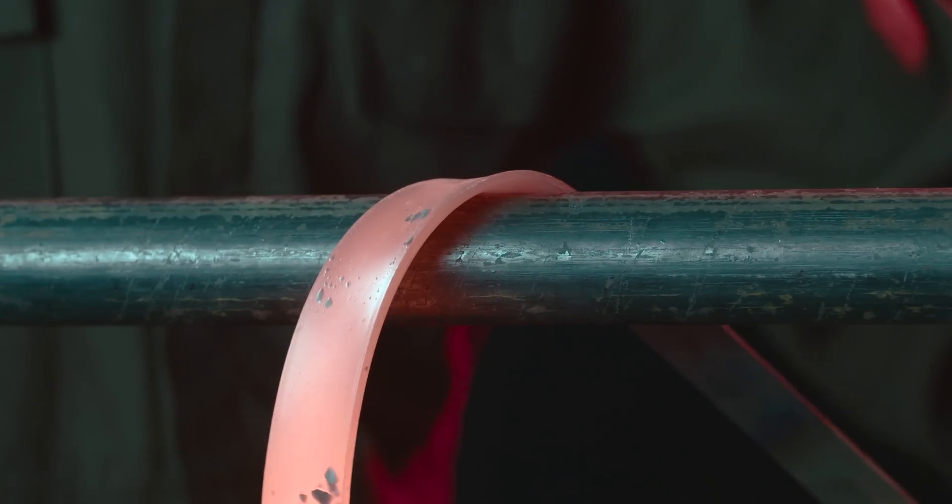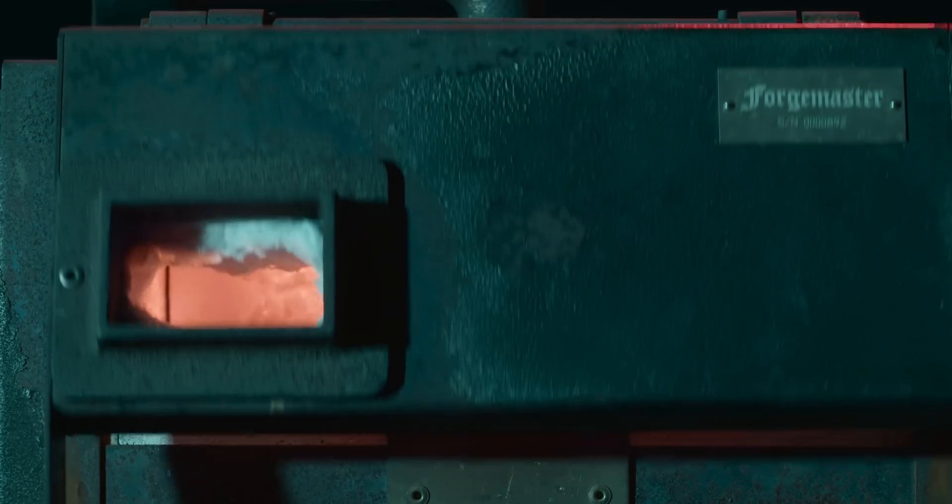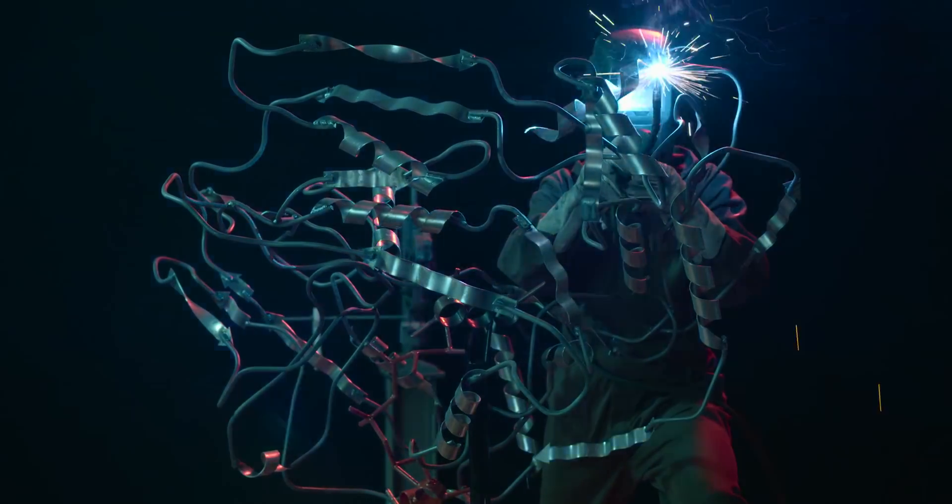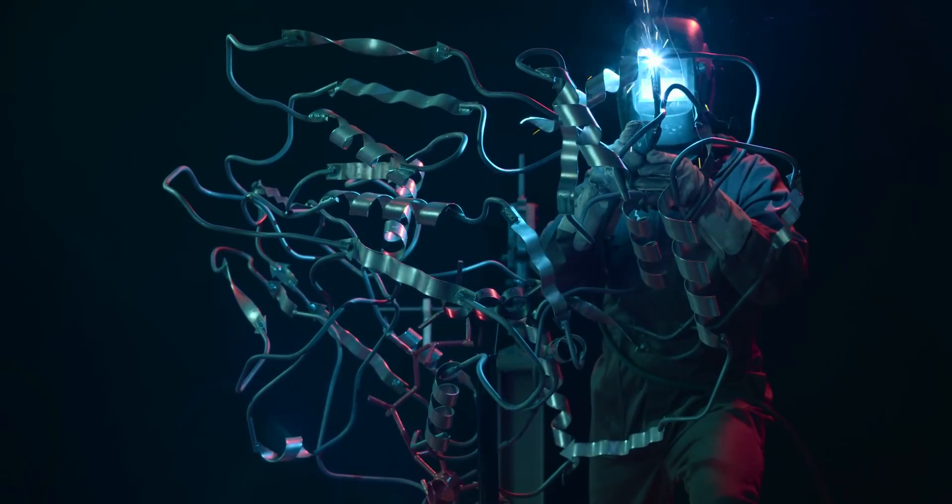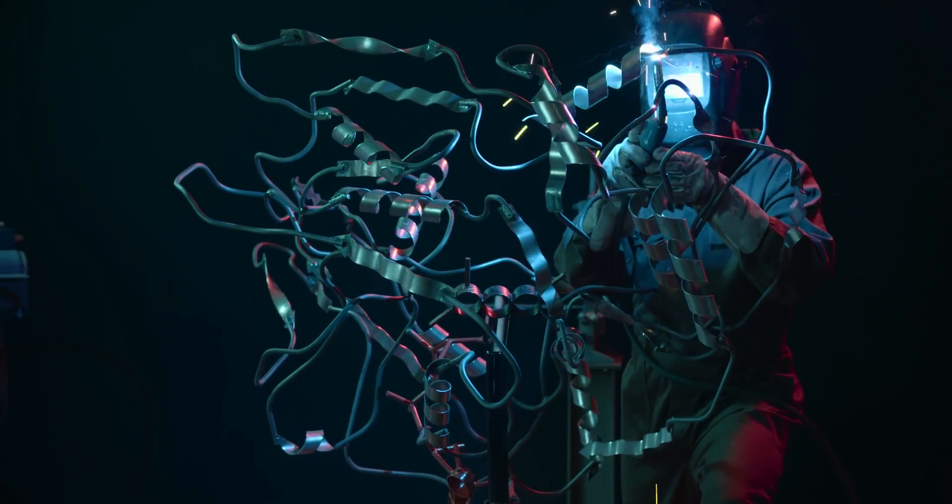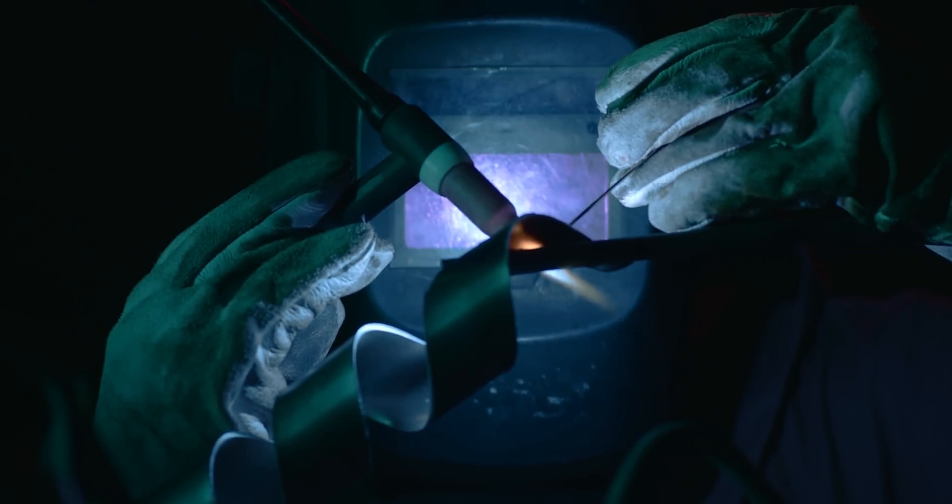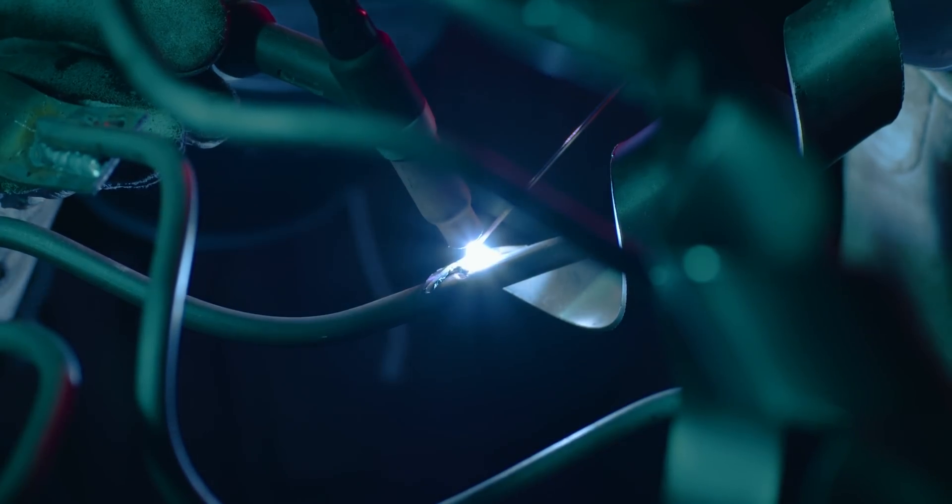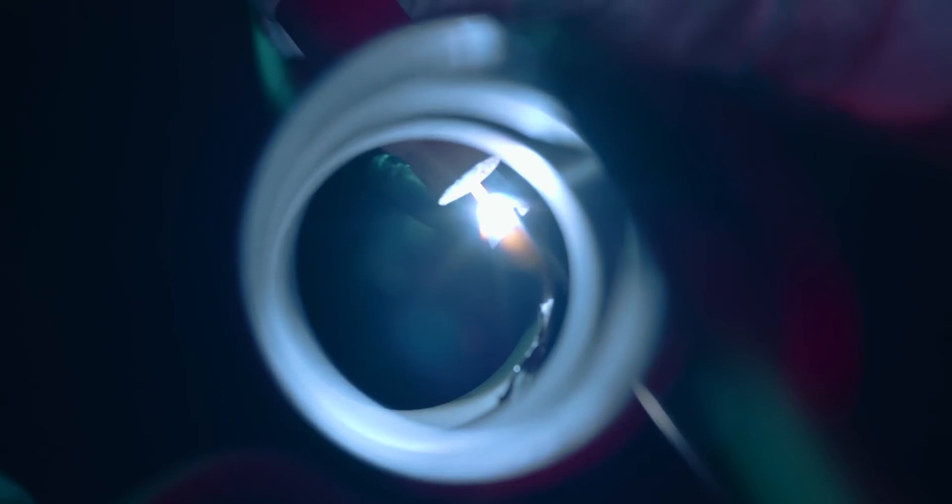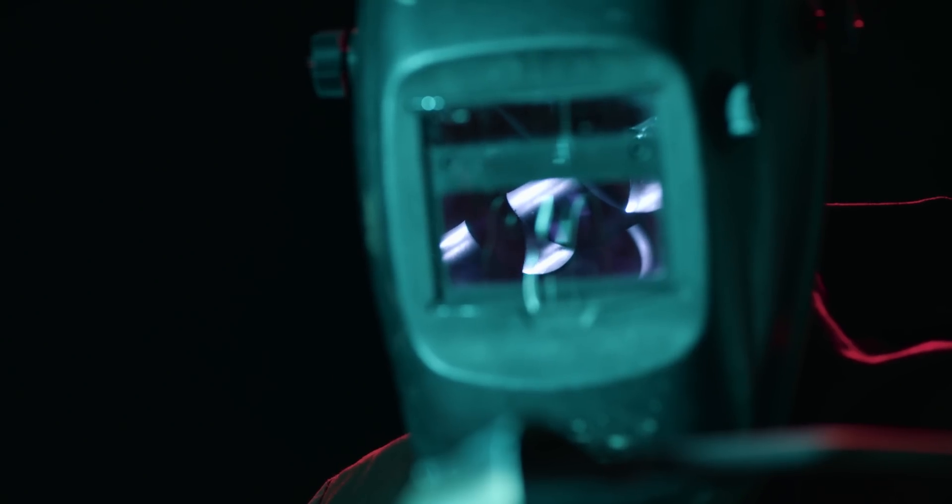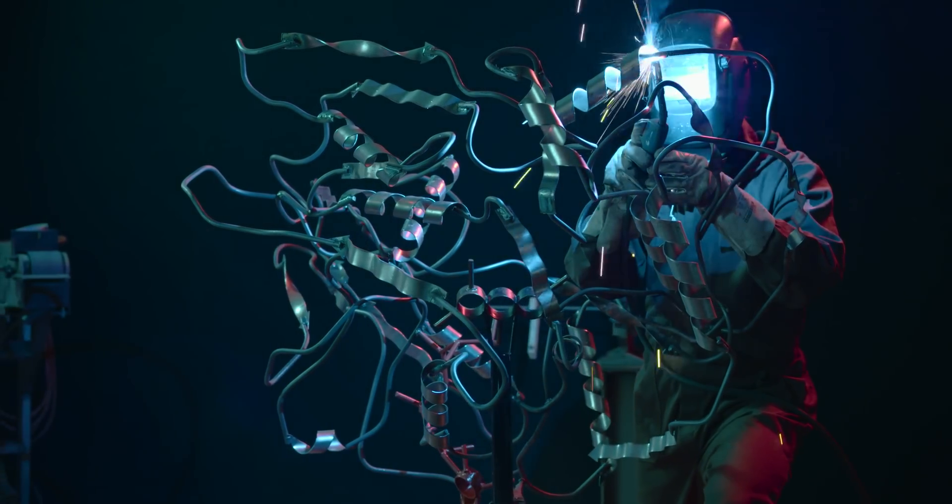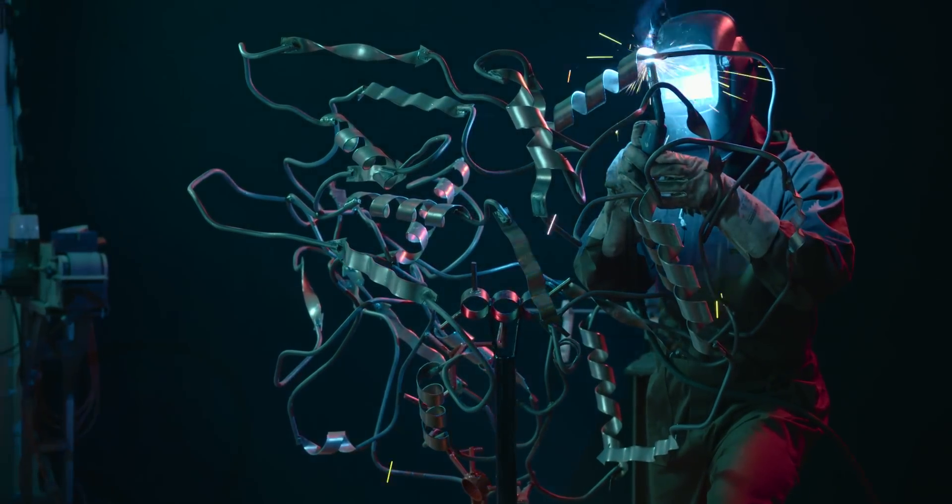In order to overcome this issue, changes would have to be made to the structure of enzymes. What you are seeing here is an artist changing the structure of a large enzyme sculpture. Scientists have recently succeeded in doing the same with real enzymes, changing their structure, creating more robust and more specific enzymes, and speeding up their reactions. This is what we call enzyme engineering.